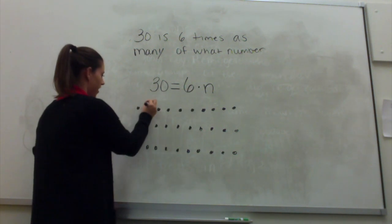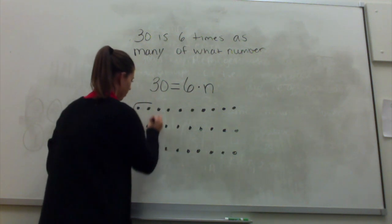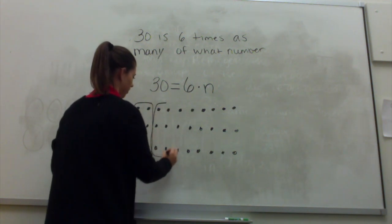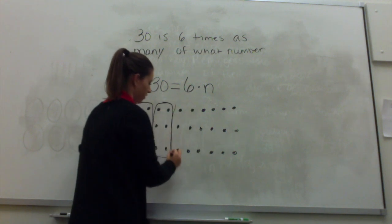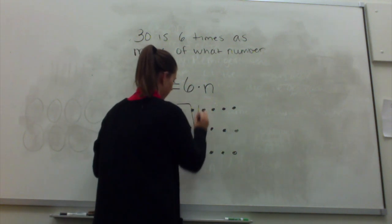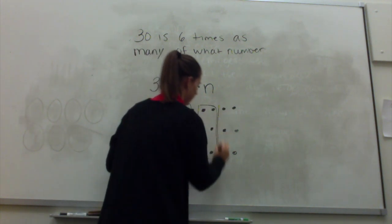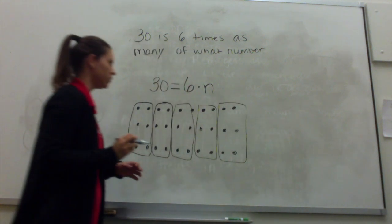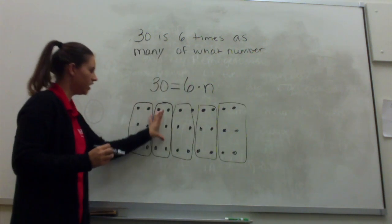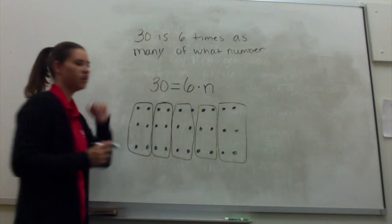All right, so this is how I grouped mine. Here's one group of 6, two groups of 6, three groups of 6, four groups of 6, five groups of 6. So 5 times the group of 6 gives us 30.